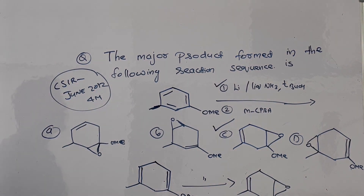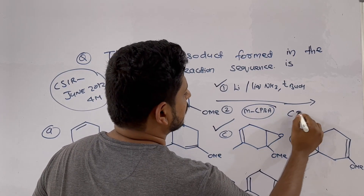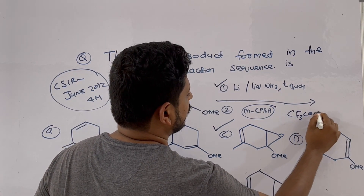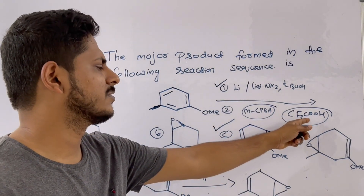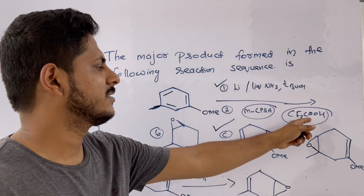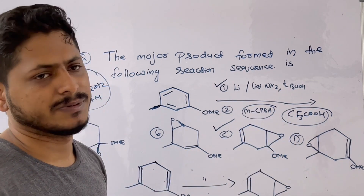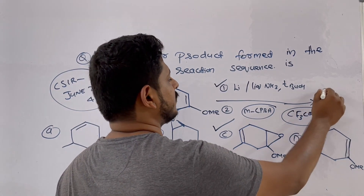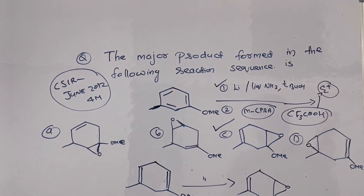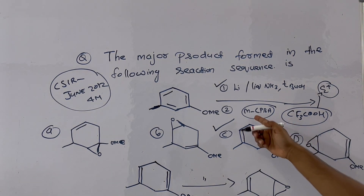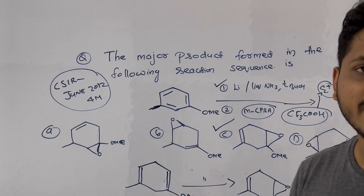Sometimes instead of mCPBA, you can also encounter CF₃COOH — trifluoroperacetic acid — as a reagent. This also acts as an epoxidation reagent just like mCPBA, because the trifluoroacetyl group makes the peroxide oxygen electron-deficient, similar to mCPBA. This kind of reagent is also used sometimes instead of mCPBA.